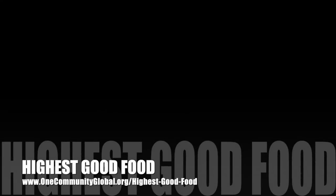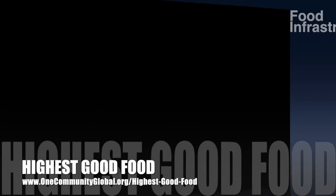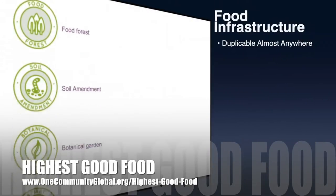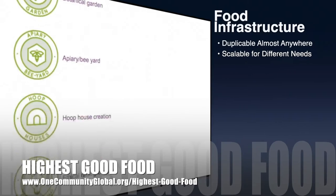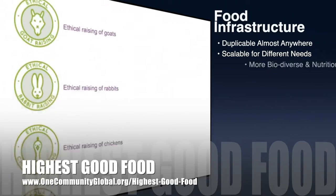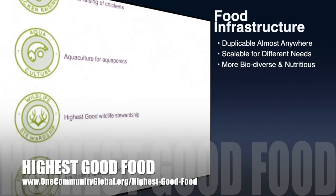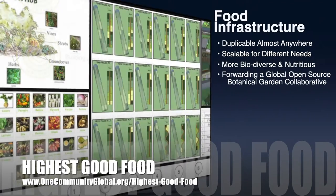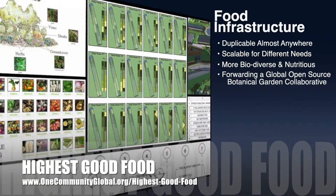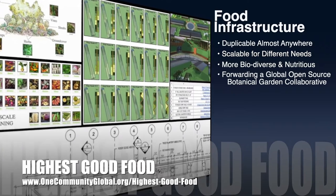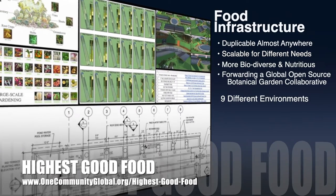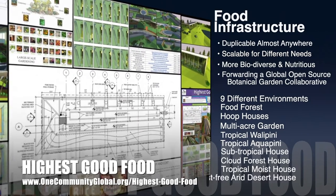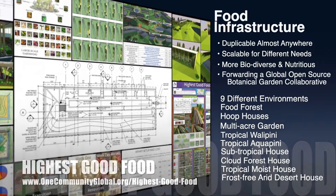One Community's approach to highest good food is duplicable almost anywhere, scalable for different needs, more biodiverse and nutritious, part of forwarding a global open source botanical garden collaborative, and includes nine different free shared and duplicable growing environments.